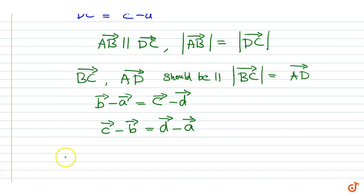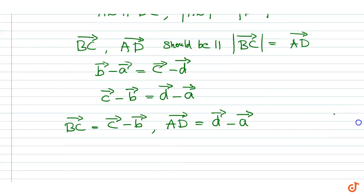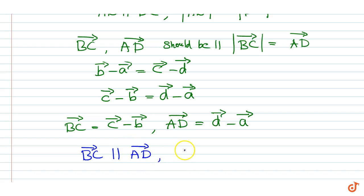We have vector BC equal to vector c minus vector b, and vector AD equal to vector d minus vector a. From this equation, vector BC is parallel to vector AD, and the magnitude of vector BC equals the magnitude of vector AD.